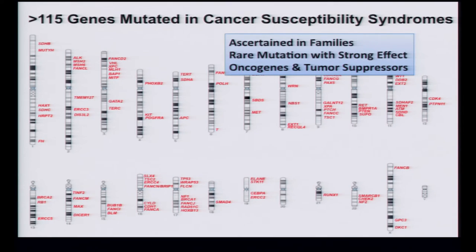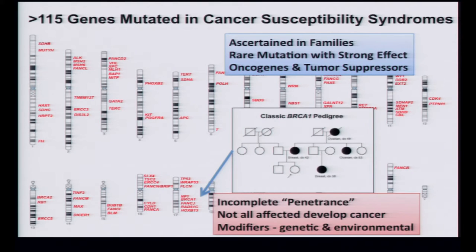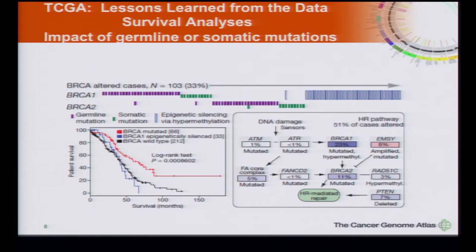We've spent a lot of time trying to do positional cloning and identifying mutated genes in cancer susceptibility syndromes — there are about 115 or 120 depending on your definition right now, and this continues to evolve. Exome sequencing will continue to put more spots on the map. One remarkable thing is we really don't see, like we see in the infectious disease world with HLA, a concentration of a cancer region. These are ascertained in families with rare mutations and have been instrumental in helping identify the concepts of both oncogenes and tumor suppressors. Even in the world of BRCA1, the penetrance — what's the risk that we would see — is not identical for each individual, underscoring both the genetic and the environmental.